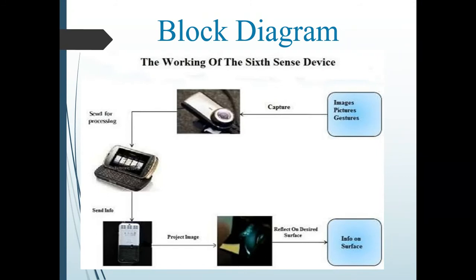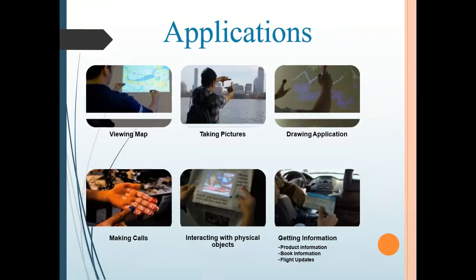This is the block diagram of Sixth Sense Technology. These are the applications: viewing map, taking pictures, drawing application, making calls, interacting with physical objects, and getting information.